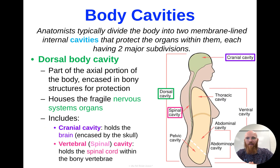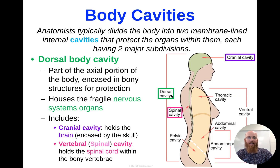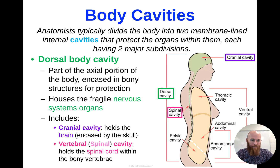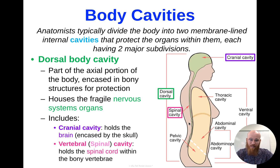Now we're getting into our body cavities. We can typically divide the body into two major subdivisions of cavities. Starting with what we have in green here on the dorsal or posterior side — that's our dorsal body cavity. This is part of your axial portion of the body and is ultimately going to encase our bony structures for protection. Those bony structures are protecting our very fragile nervous system organs. The dorsal body cavity includes your cranial cavity, which holds the brain inside your skull, and your spinal cavity, which houses your spinal cord within those bony vertebrae.